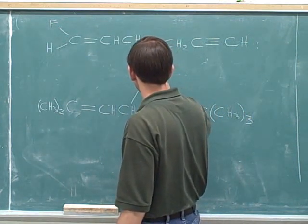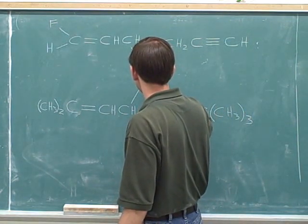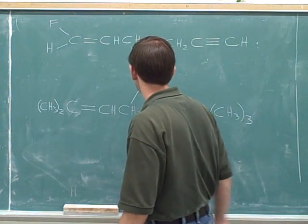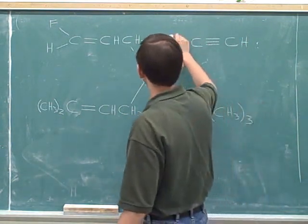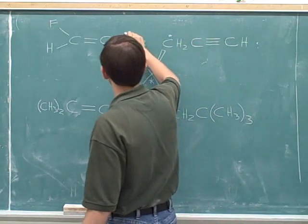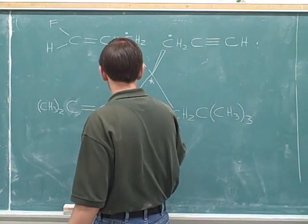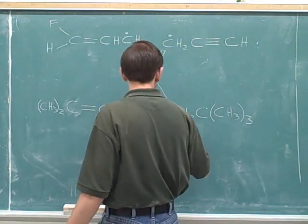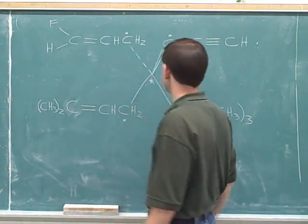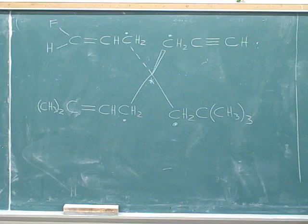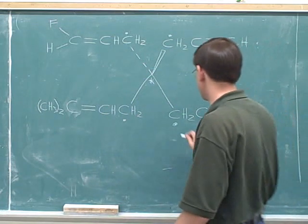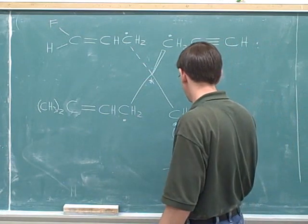Here's the stereocenter. You can mark it with an asterisk. Let's put dots for the directly connected atoms. We have a four-way tie — four carbons. Let's list what each of those four carbons is attached to.